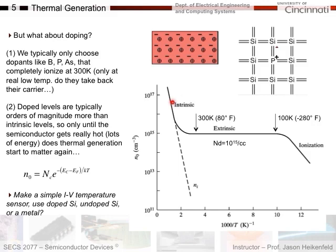Here's a practical application: how would you make a simple current-voltage temperature sensor for measuring home temperature? You would use undoped silicon. With doped silicon, conductivity doesn't change much with temperature around room temperature. But with undoped silicon, you get an exponential change in conductivity with temperature — a huge change in current flow through the device — making it a very sensitive temperature measurement tool.